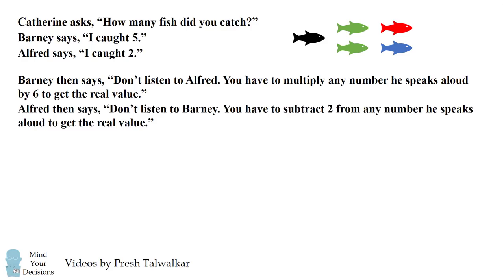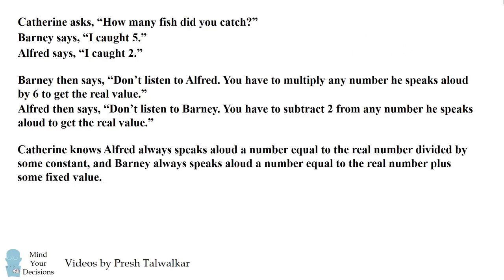Alfred then says, don't listen to Barney. You have to subtract two from any number he speaks aloud to get the real value. Catherine knows Alfred always speaks aloud a number equal to the real number divided by some constant, and Barney always speaks aloud a number equal to the real number plus some fixed value.